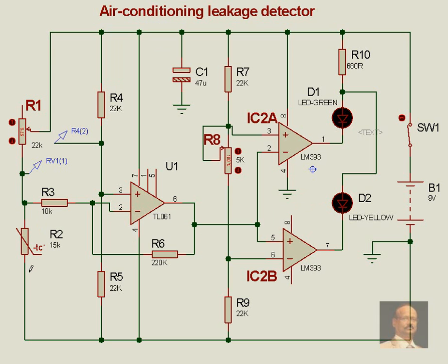We have a temperature sensor here, and a bridge is formed out of R1, R2, R4, and R5. When the bridge is balanced, both the LEDs will be in the off situation.